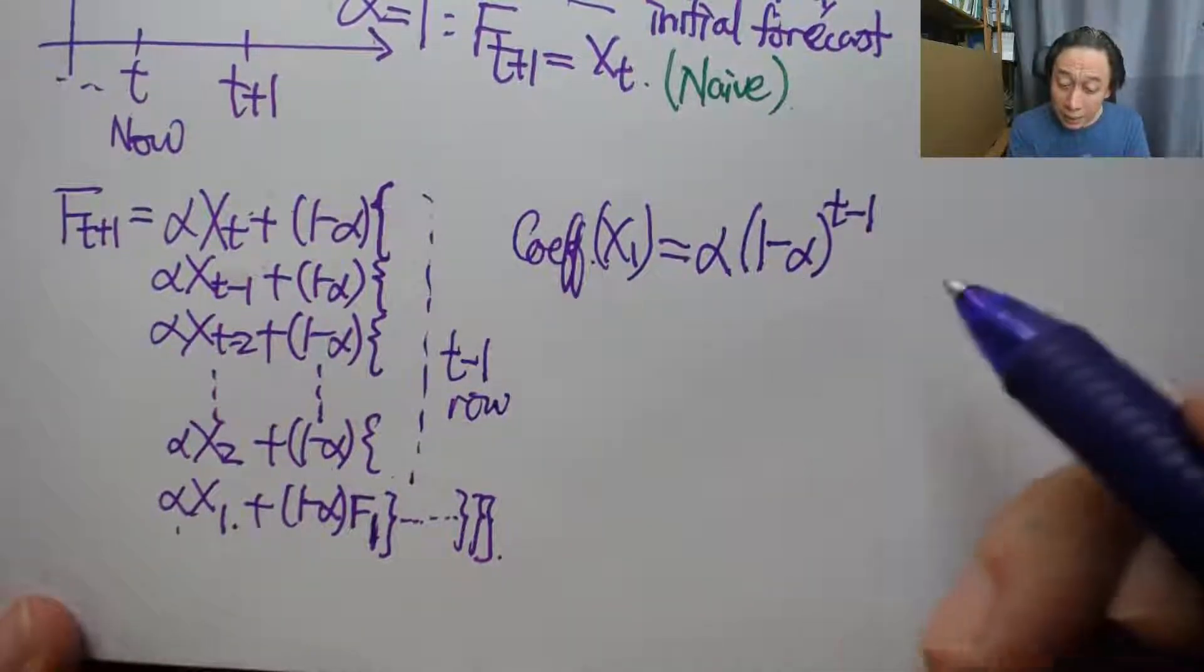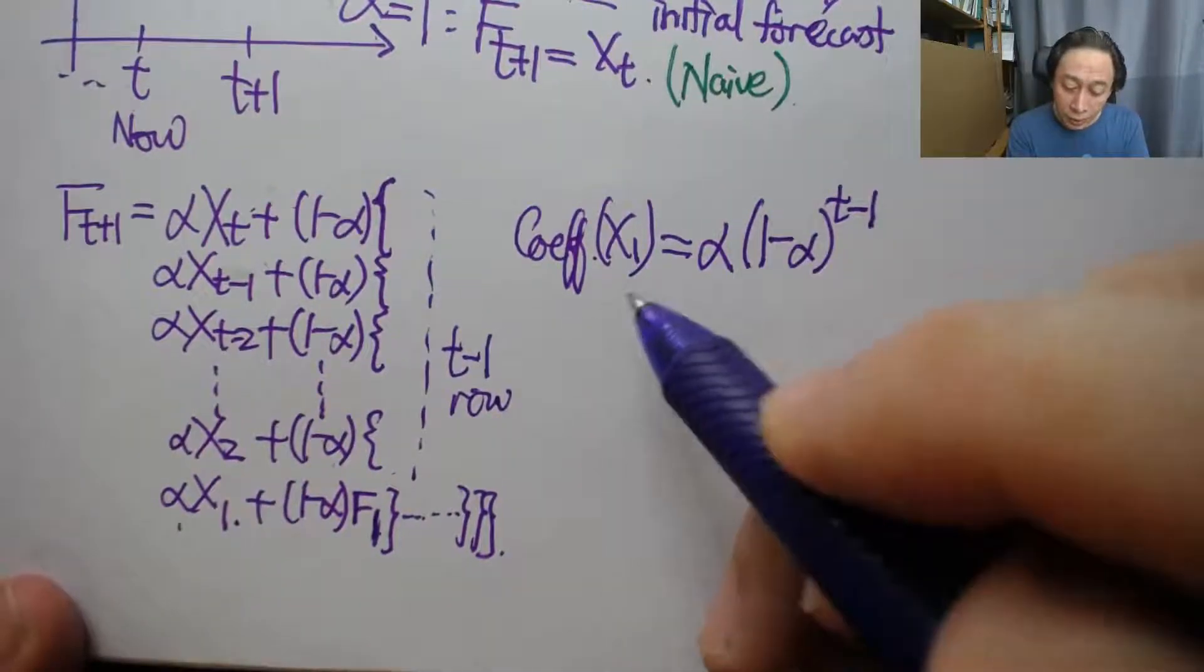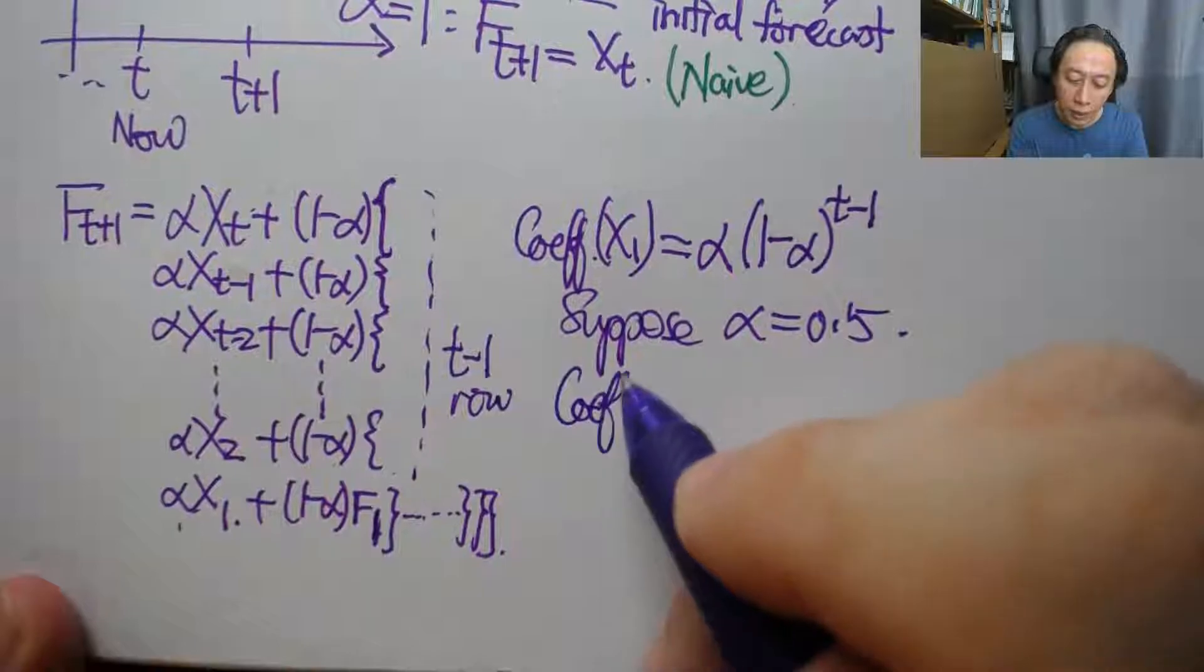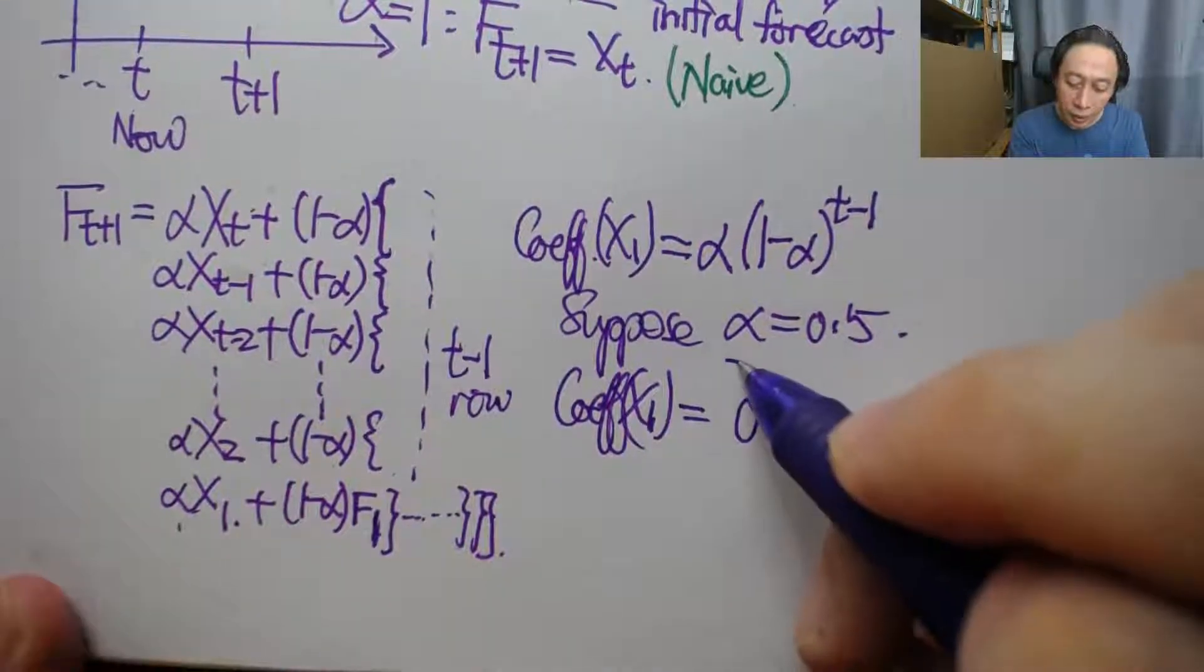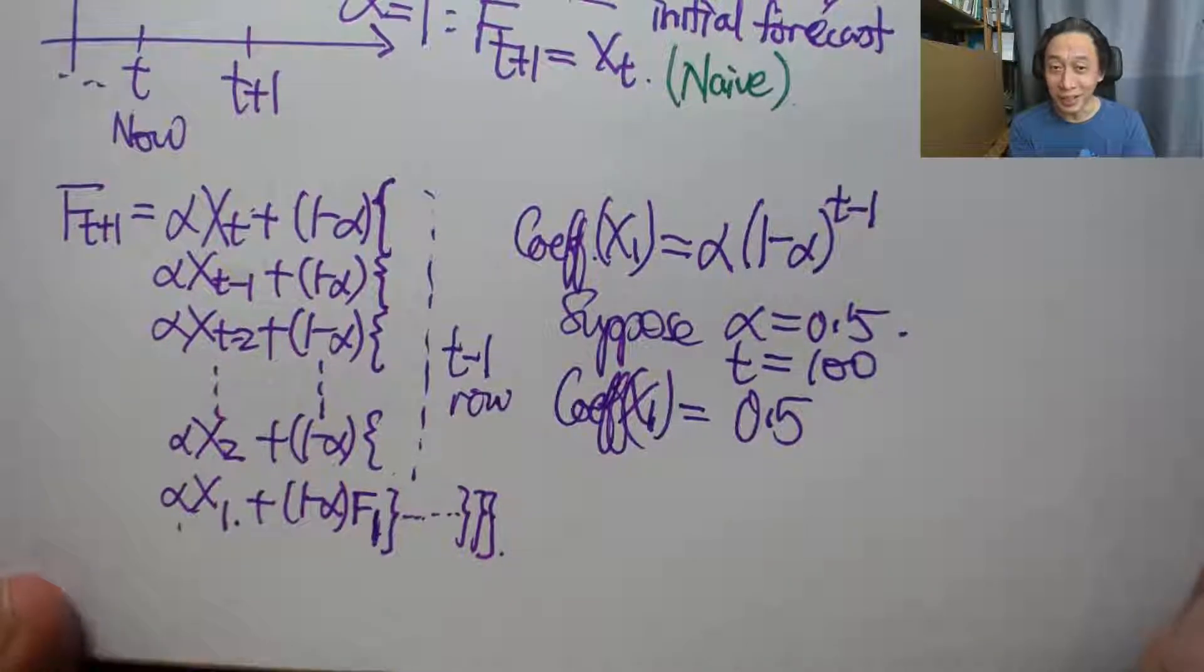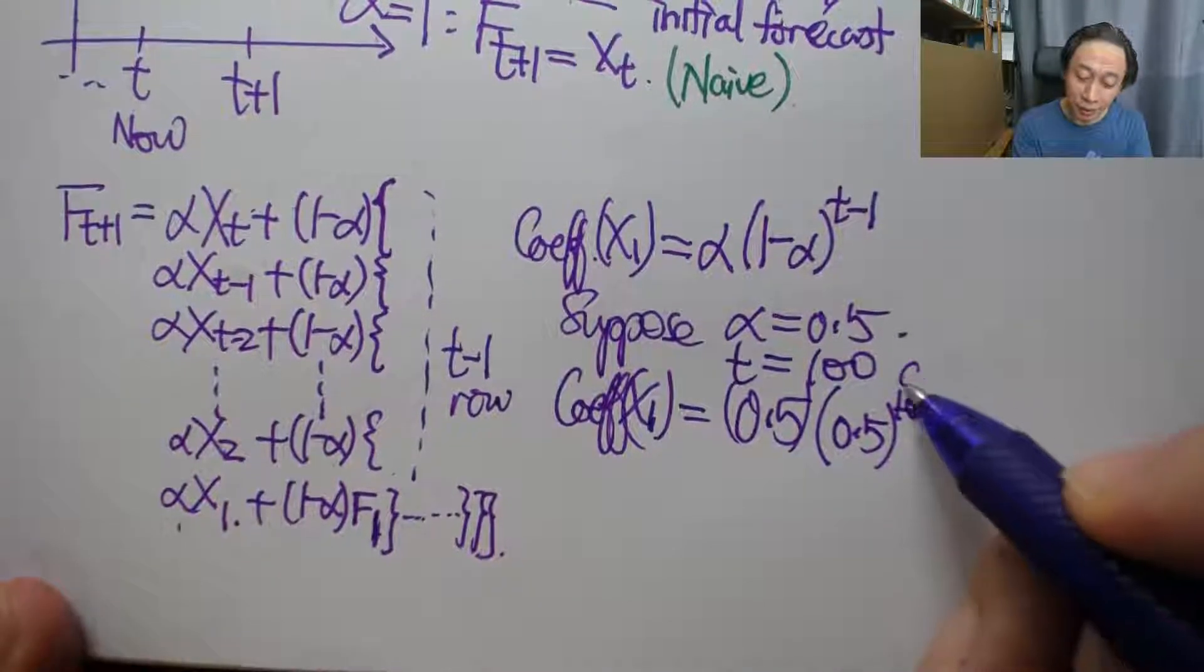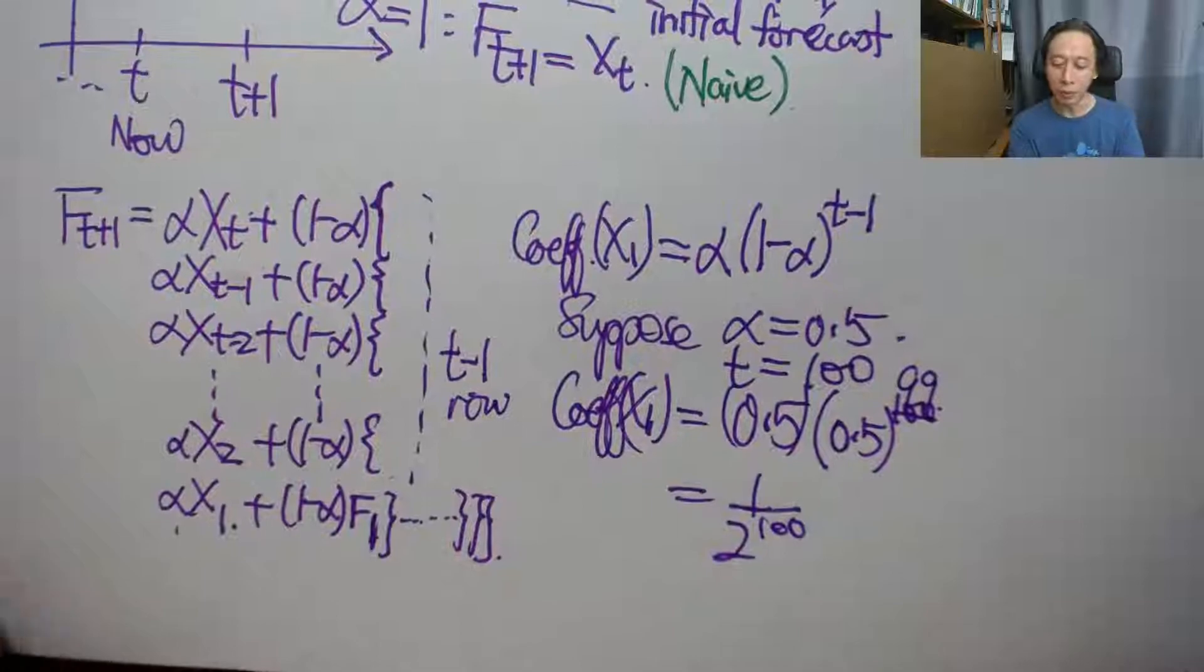So what it means is that, suppose, just to get an idea of what this means, right? So let's say, suppose alpha equals to 0.5. So then the coefficient of x1 becomes 0.5 times, and t, let's say it is 100. Let's not put it as 100,000, it's just 100. So 0.5 times 0.5 to the power of 100, 99, okay.